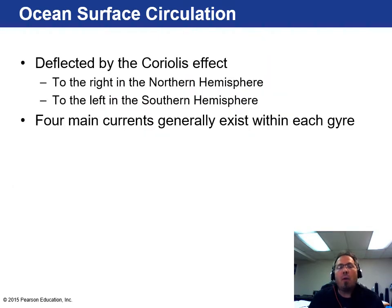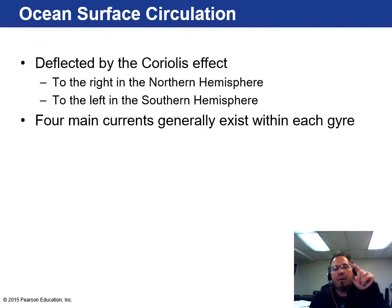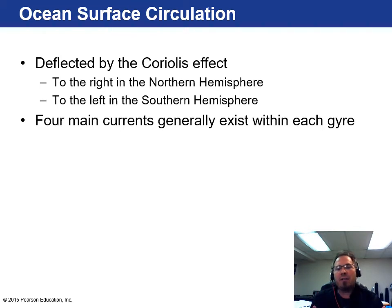Ocean circulation is deflected by the Coriolis effect — the effect of having a spinning body like the Earth. In the Northern Hemisphere it spins to the right, and in the Southern Hemisphere it spins to the left. Those are the main currents that generally exist within each gyre.